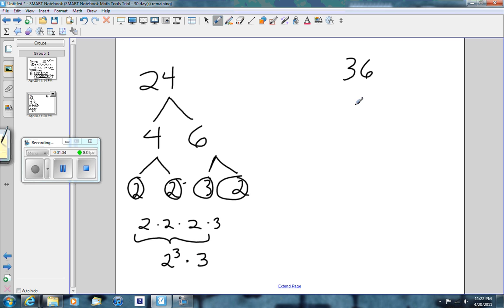The prime factorization of 36, we'll go for 6 and 6. Neither of those are prime, so we keep going. 2 times 3. Over here, also 2 times 3. These are prime numbers, so we stop.